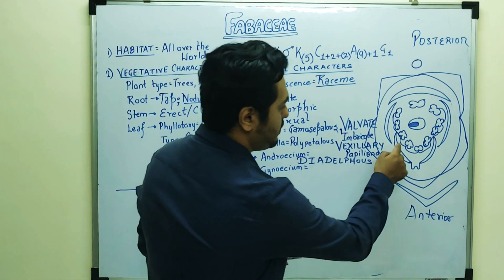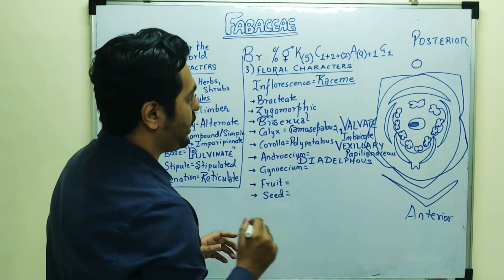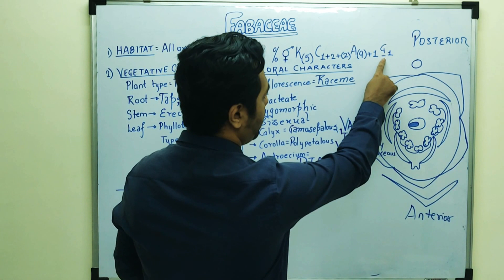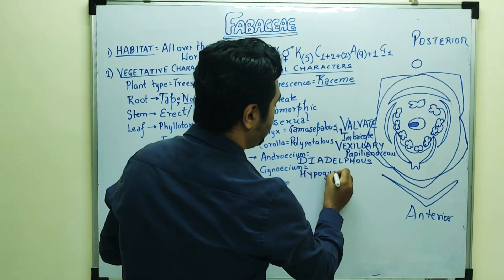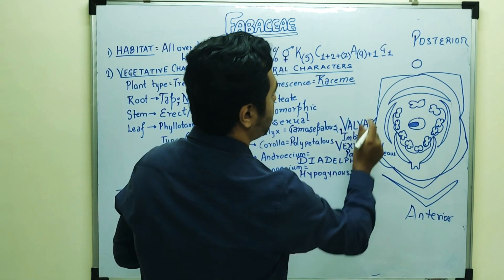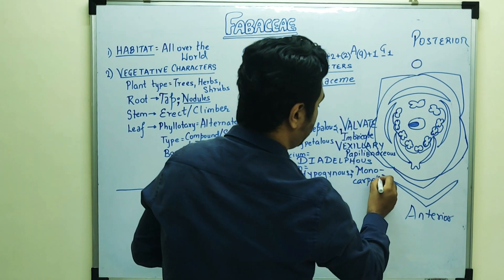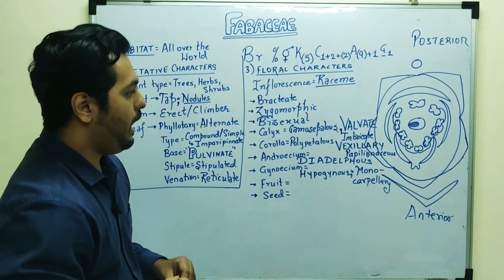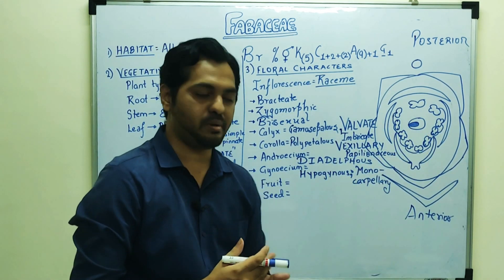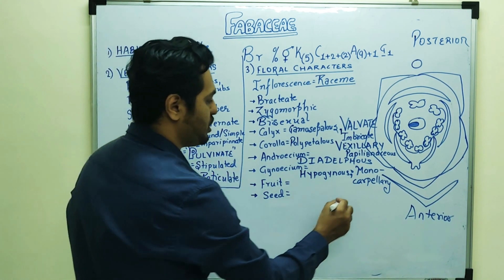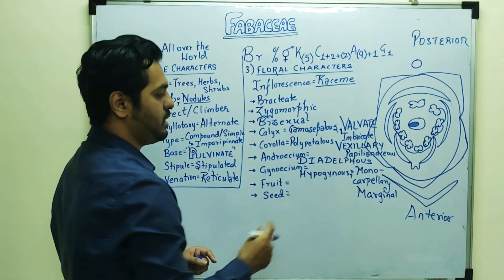The anther is dithecous. The gynoecium: this is a hypogynous flower having a superior ovary. It is monocarpellary, unilocular, and the placentation is marginal placentation, where ovules are attached along the margin.